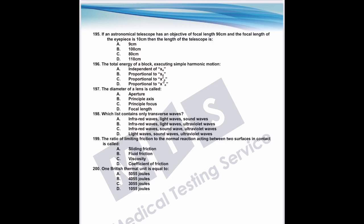Question 197: the diameter of a lens is called its aperture.